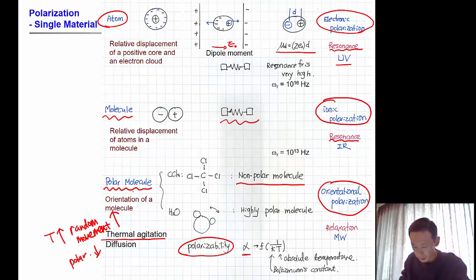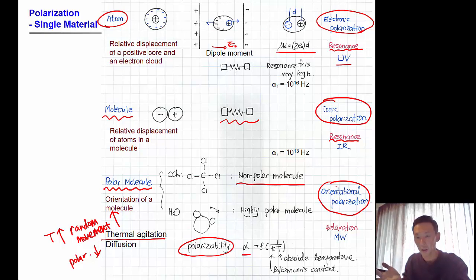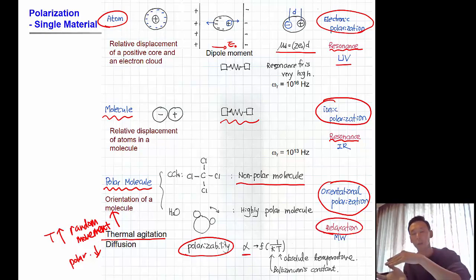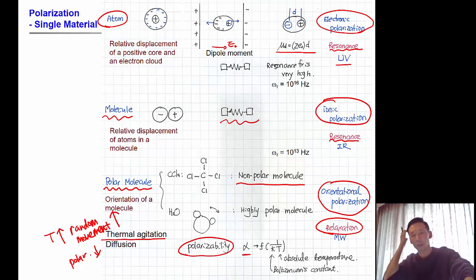This orientational polarization is due to molecule reorientation, and it causes relaxation behavior. When the external field is released, the molecules will be randomly oriented again.